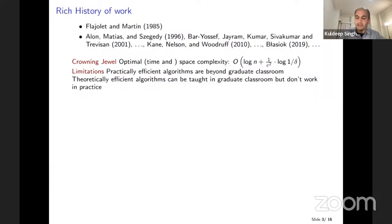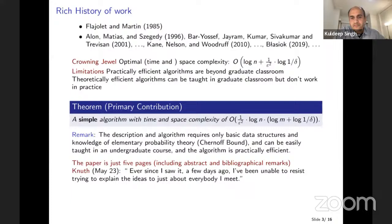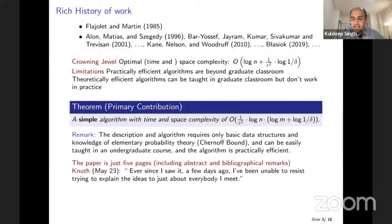I'm going to discuss today a very simple algorithm which has time and space complexity logarithmic in N as well as logarithmic in M — so there is an additional overhead of log M. Much more importantly, the algorithm relies on very simple basic data structures. In my view, it can be taught to undergraduates in a classroom and the algorithm also turns out to be practically efficient. Notably, the theoretically efficient algorithms often rely on limited independence hash functions, which makes them tricky to introduce to lower-level undergraduate classes. What we discuss today does not rely on any independent hash functions.